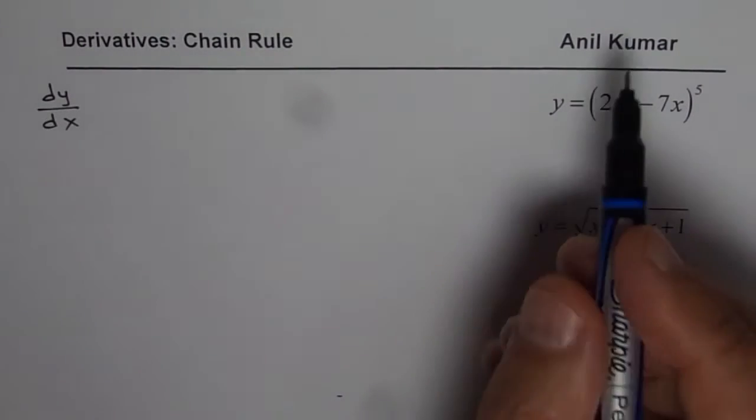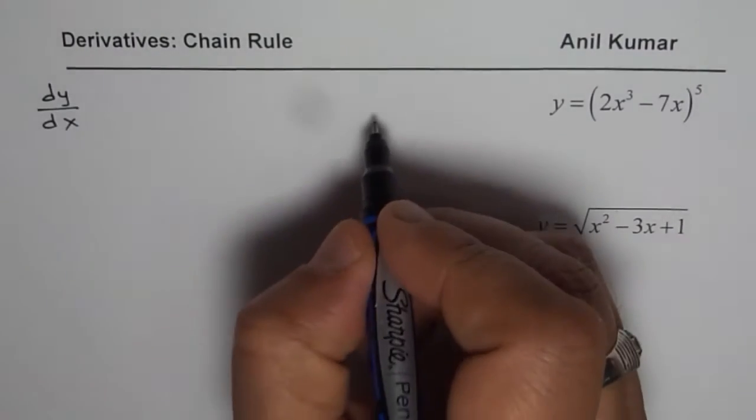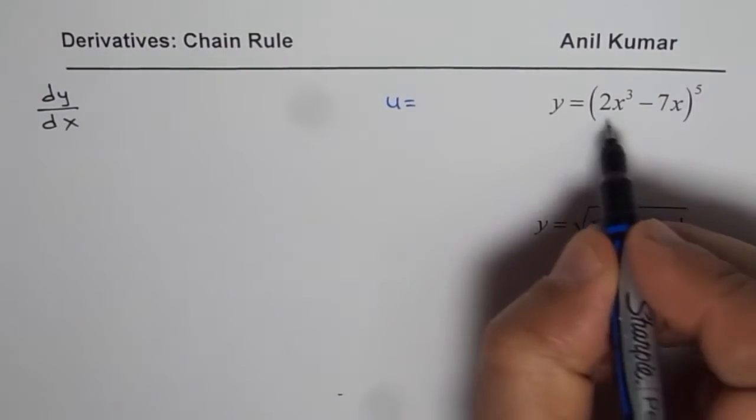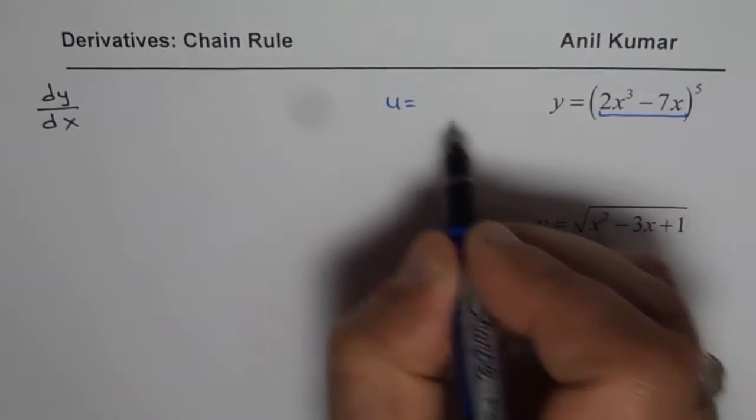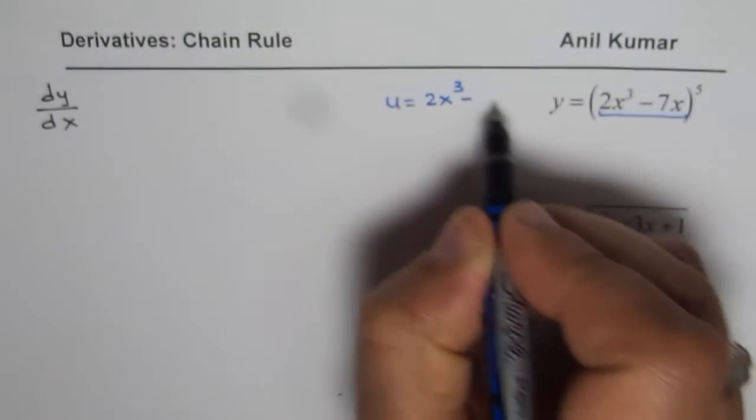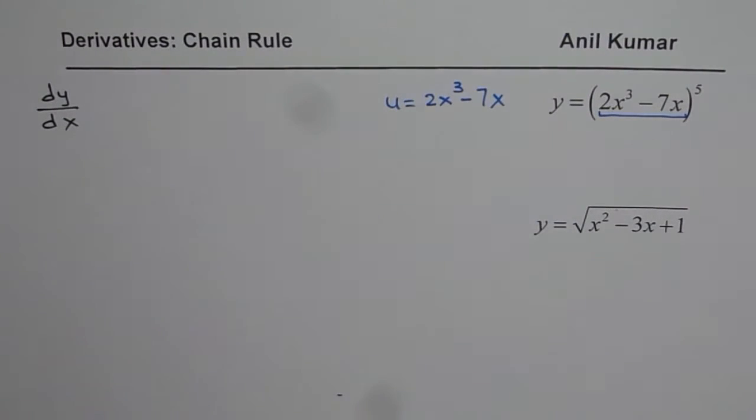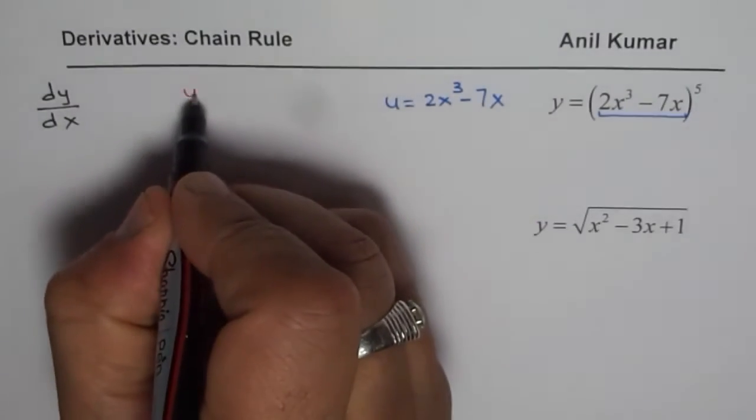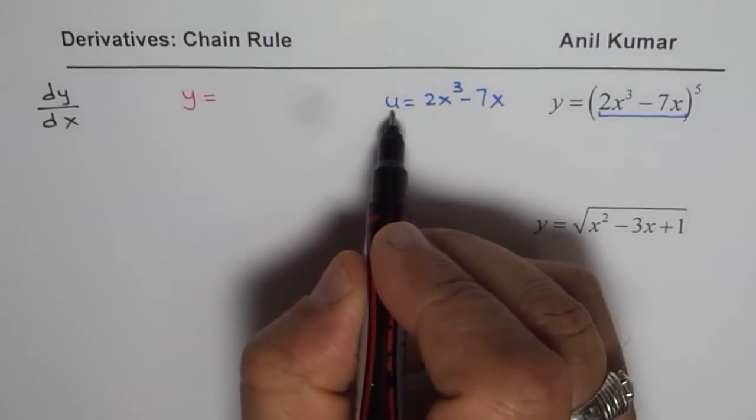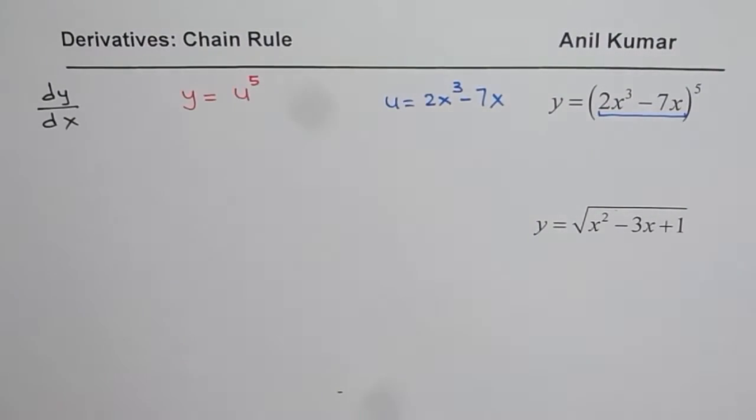let us say one function be u equals to 2x³ - 7x. In that case, we could write y equals to u⁵. You get the point.